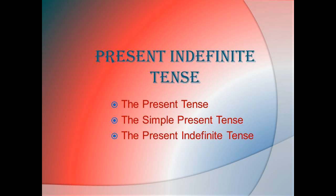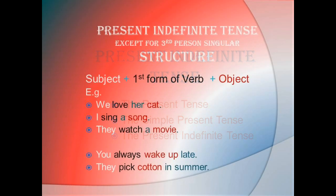Other names of present indefinite tense are: the present tense, the simple present tense, or the present indefinite tense. In this type of tense, mostly a sentence is made to show the regularity of work or a kind of fact. For example: I work in the admin department. They teach English. The sun rises in the east.